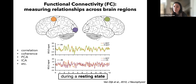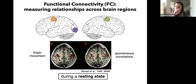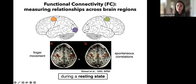What was surprising when first observed by Biswall and colleagues in the 90s is that this is true not just during a motor task, but even when people are staring at a fixation cross — sitting as still as possible. Even in those resting state moments, left and right motor cortex are very highly correlated. The pattern of correlations in spontaneous activity during rest mimics the pattern of evoked activity in different task contexts — finger movement tasks evoke activity in the same motor regions that are correlated at rest.